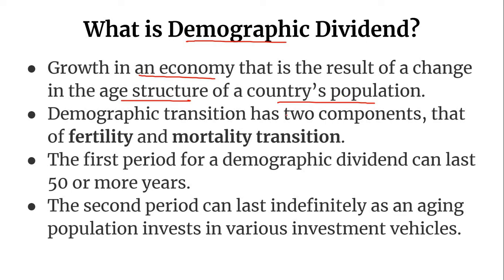The demographic transition has two components: fertility and mortality transition. However, it is fertility transition that plays a decisive role in determining the demographic dividend of any population. The change in age structure is typically brought on by a decline in fertility and mortality rates.